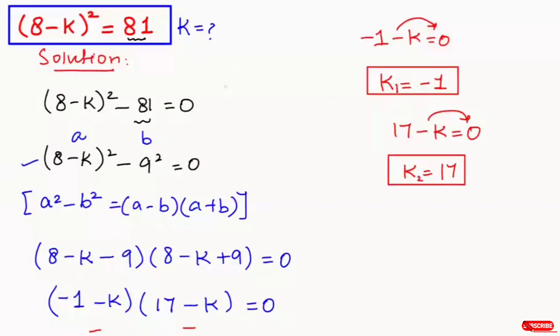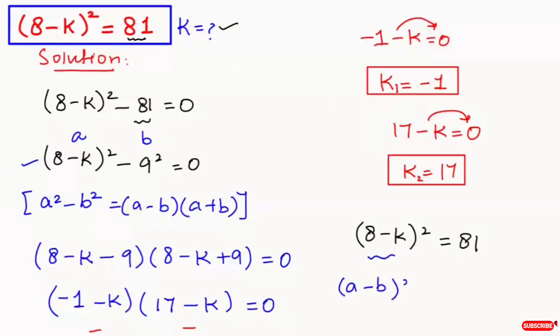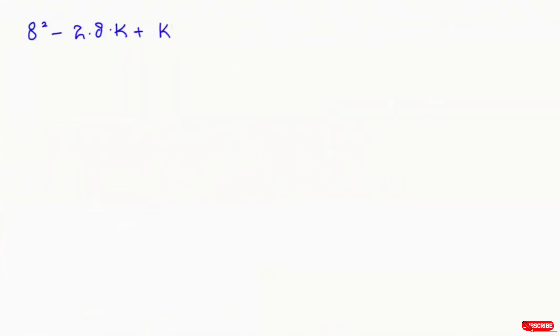Now I'm going to solve the same expression using the second method. The expression we have here — I will apply the algebraic identity that is (a minus b) whole to the power of 2 can be written as a squared minus 2ab plus b squared. Here, a is 8 and b is k, so this equation can be written as 8 squared minus 2 times 8 times k plus k squared is equal to 81.